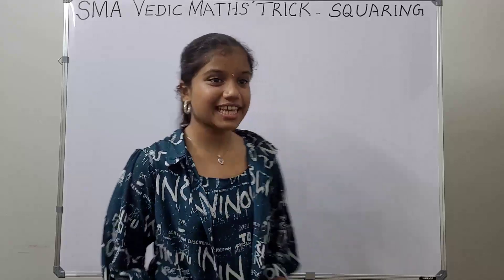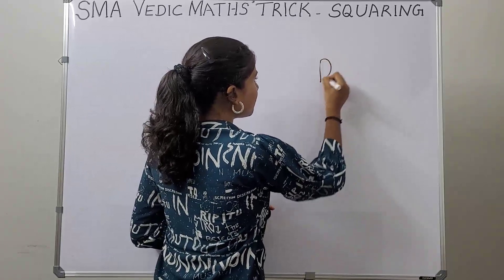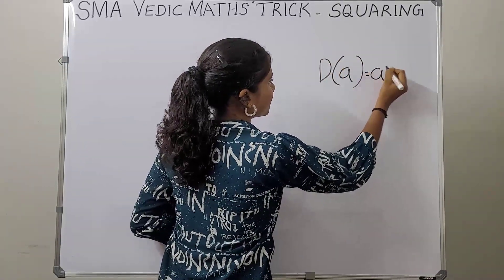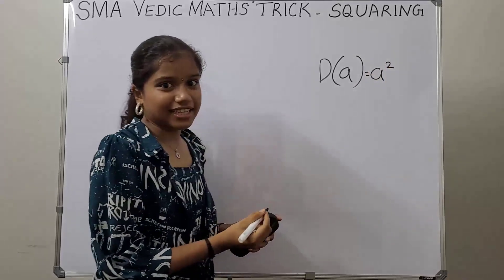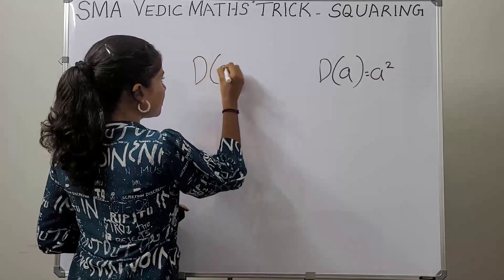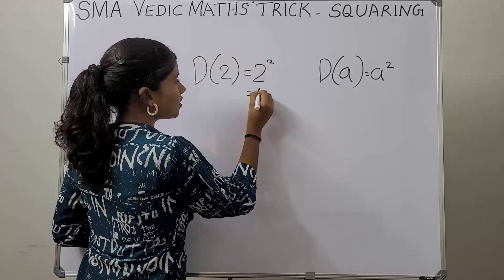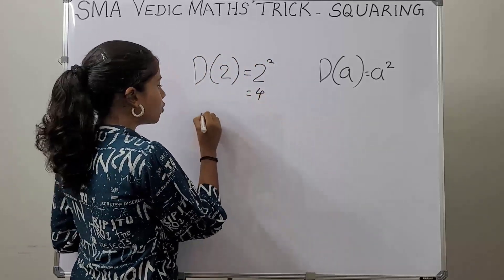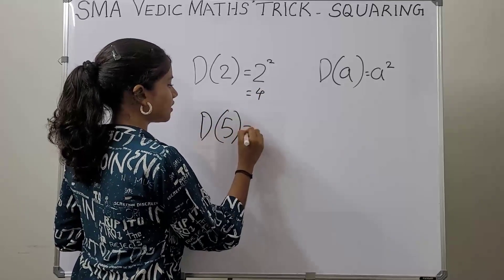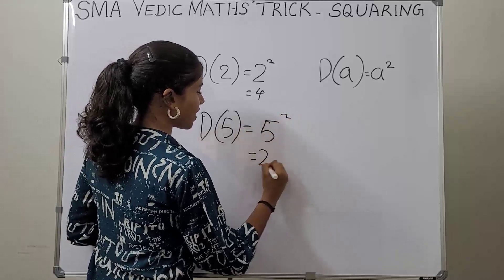Duplex of a single digit is the number squared. That is, if the number is a, duplex of a is a squared. Let's take an example: duplex of 2 is 2² which is 4, and duplex of 5 is 5² which is 25.